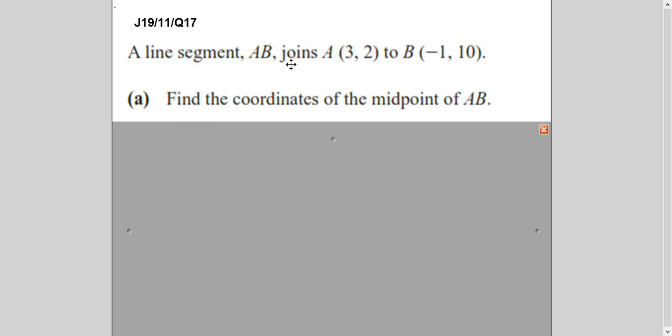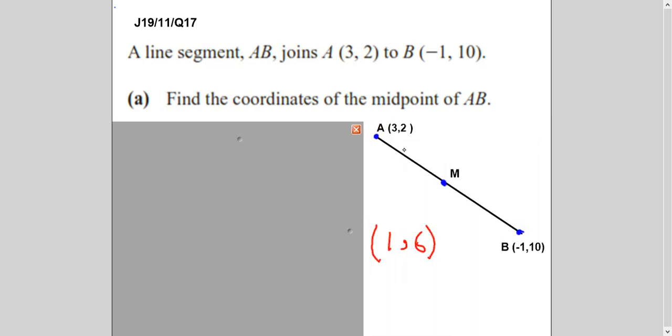A line segment AB joins point A and point B. So you can say there are two points and they are joined by a line. You have to find the coordinates of the midpoint of AB. For example, if I draw up a sketch here, suppose this is my point A (3,2) and this is my point B (-1,10). I have to find out this midpoint, the coordinates of this midpoint.